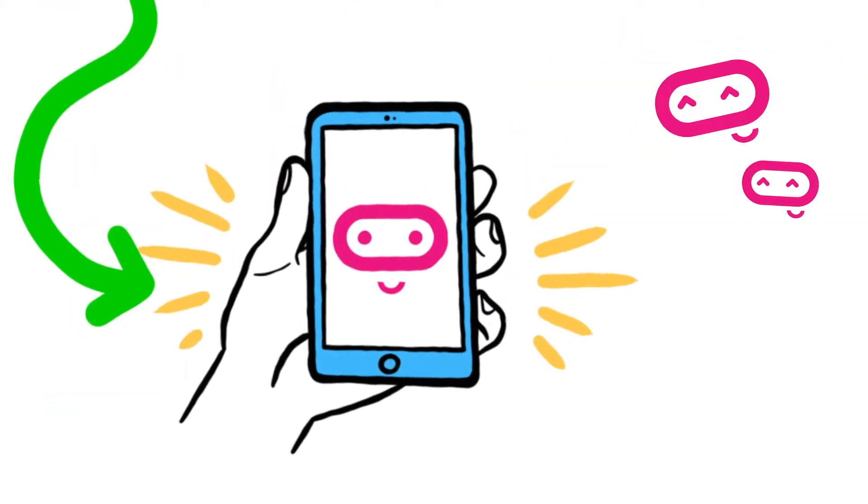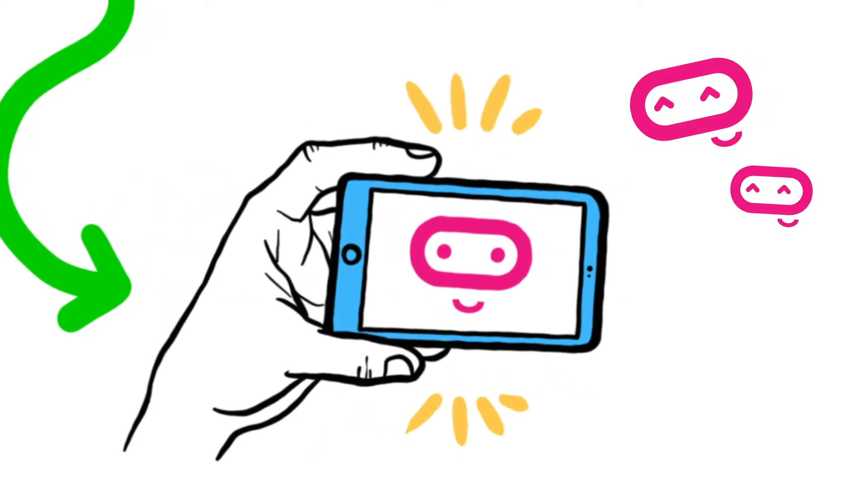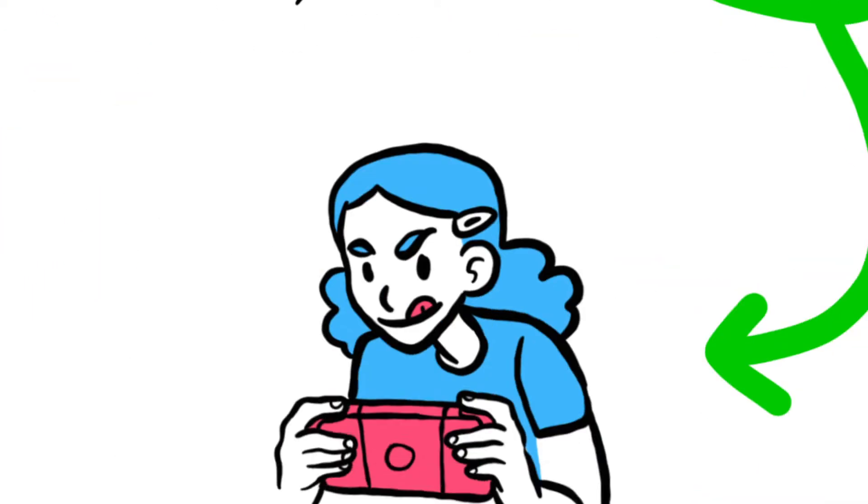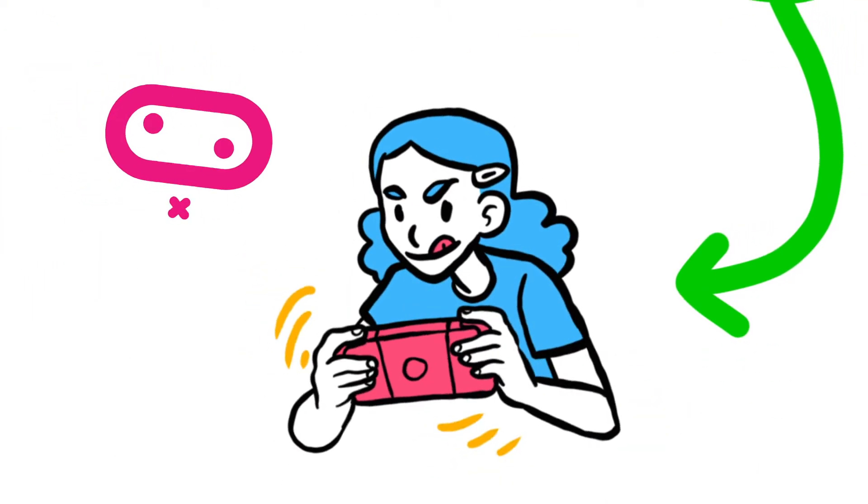A mobile phone uses an accelerometer to detect when it should switch the screen view from portrait to landscape as you move it, and game consoles use accelerometers to detect the tilt of the controller and adjust the game view accordingly.